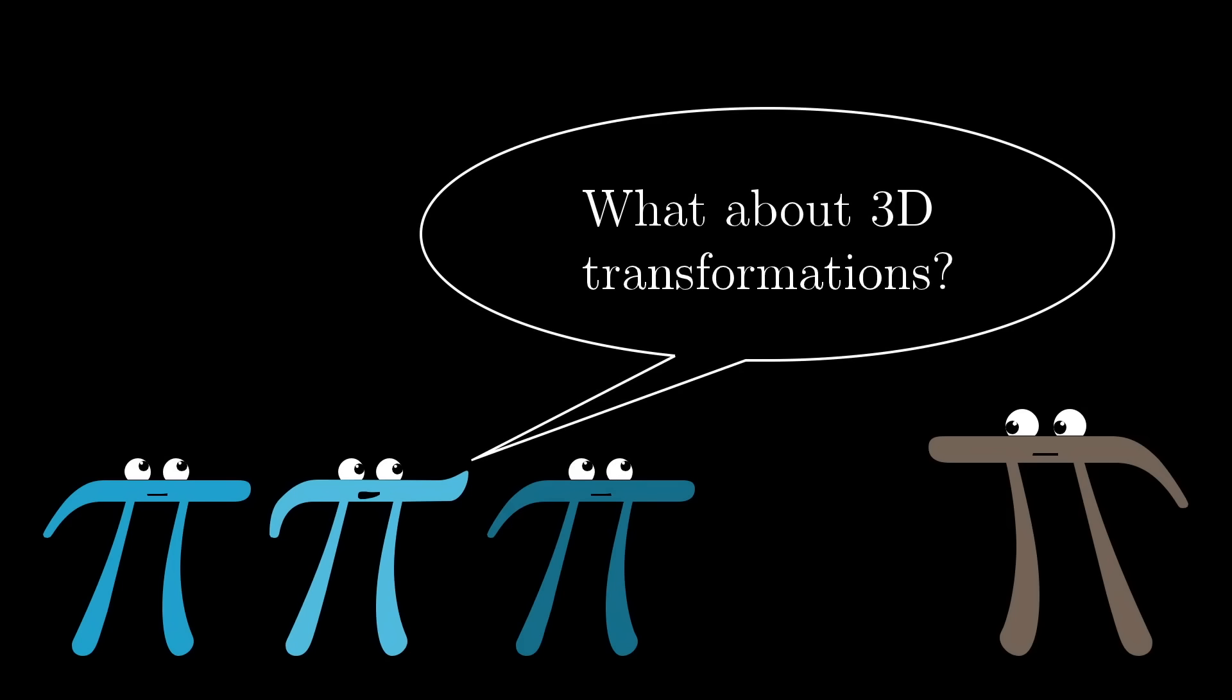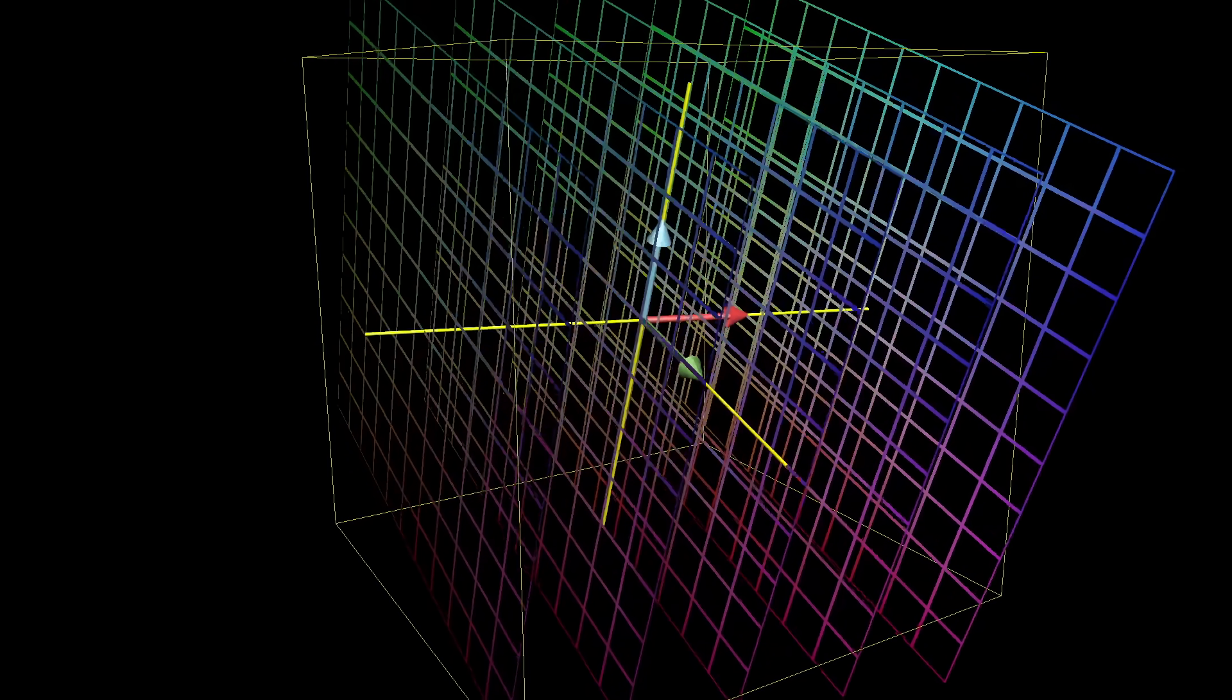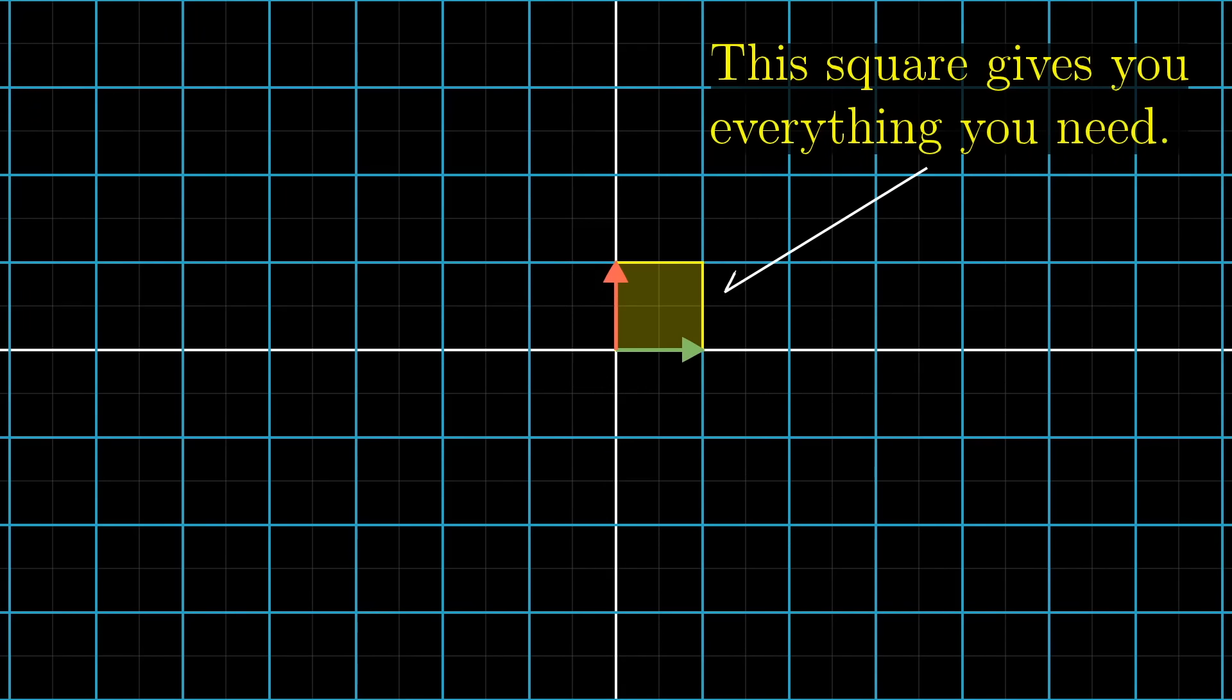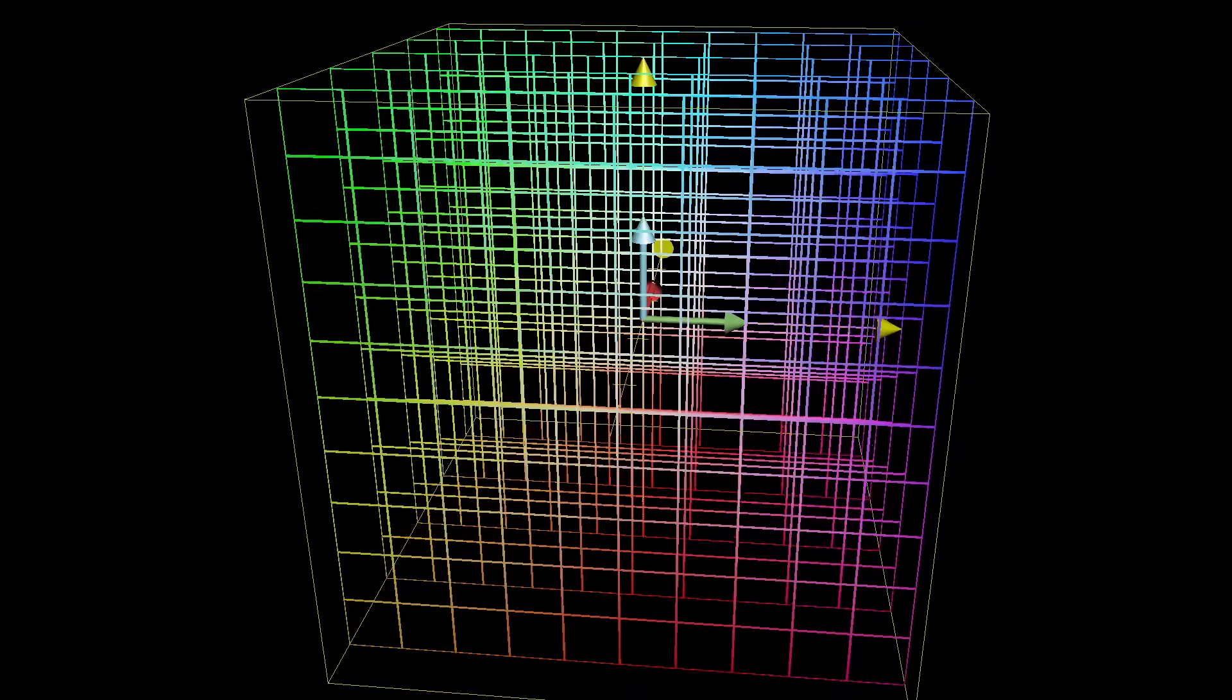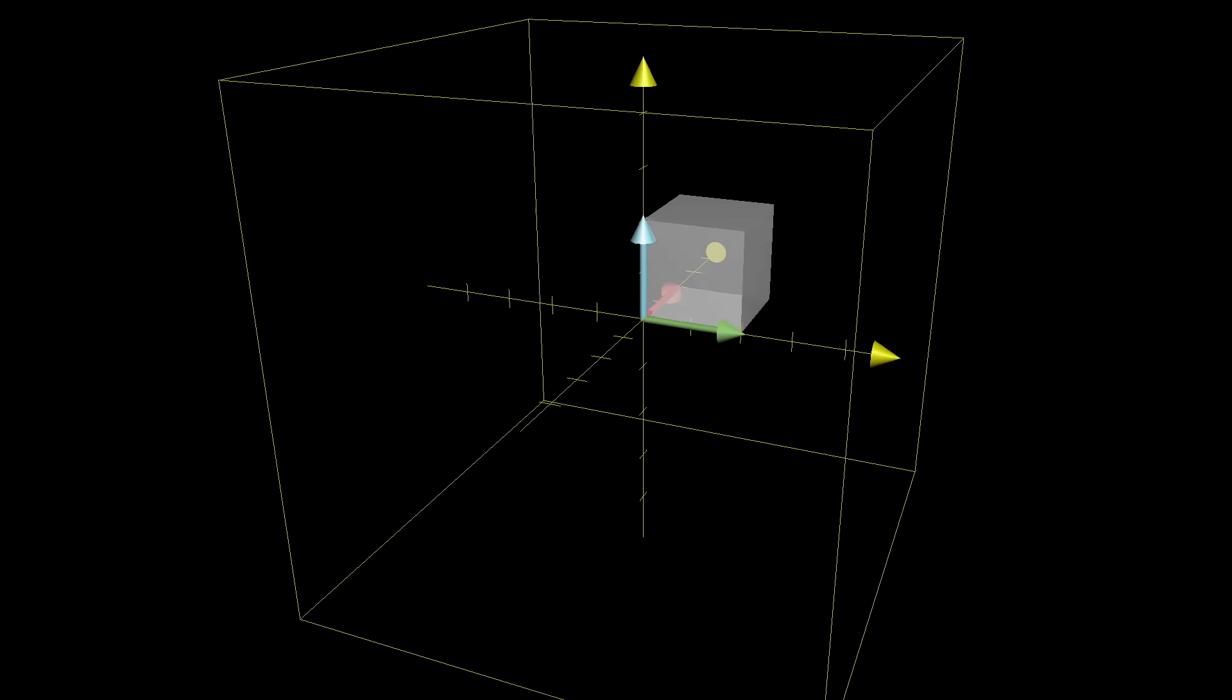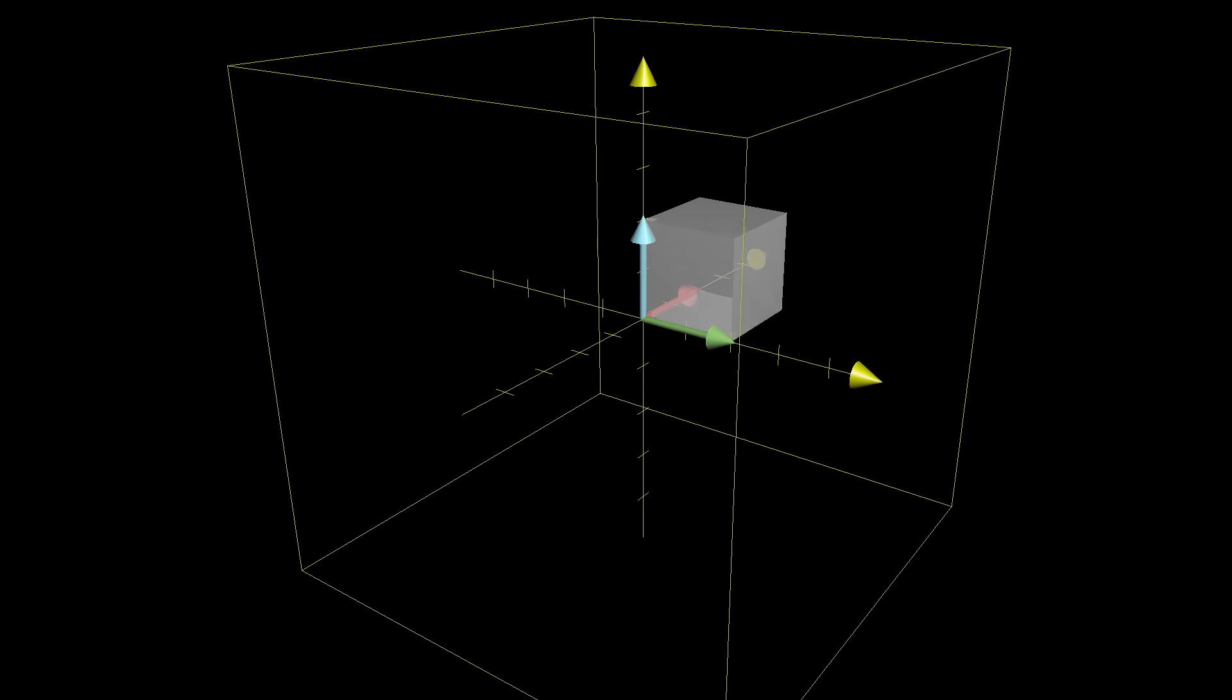So that's the understanding of determinants in two dimensions. What do you think it should mean for three dimensions? It also tells you how much a transformation scales things, but this time, it tells you how much volumes get scaled. Just as in two dimensions, where this is easiest to think about by focusing on one particular square with an area 1 and watching only what happens to it, in three dimensions, it helps to focus your attention on the specific 1x1x1 cube whose edges are resting on the basis vectors i-hat, j-hat, and k-hat.